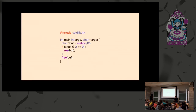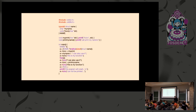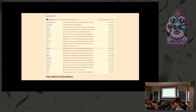Before we start, I want to ask you some questions. Can you see a problem with this code? Double free — nice, that was about four seconds. Can you see a problem with this code? Use-after-free — yeah, that was even faster.